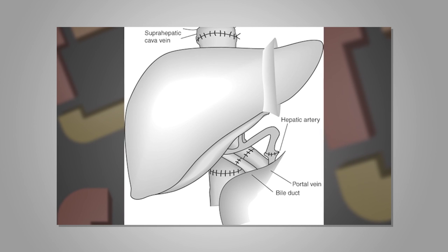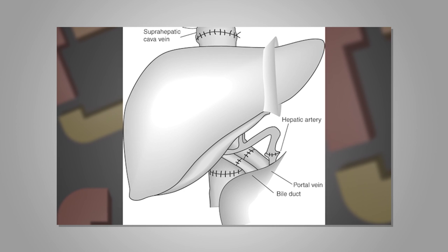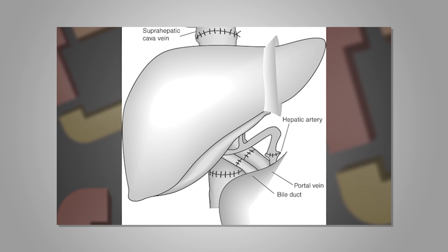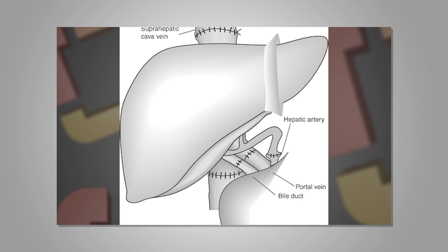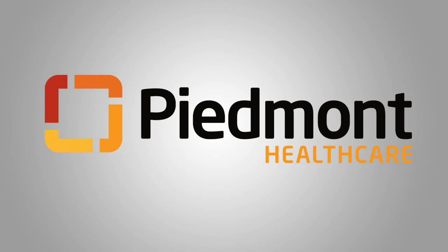The average operative time for a liver transplant is four to six hours, and the average length of stay is 24 hours in the intensive care unit and a seven to eight day hospital stay. Have a great day.